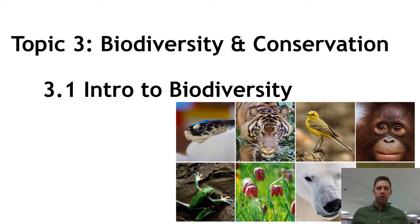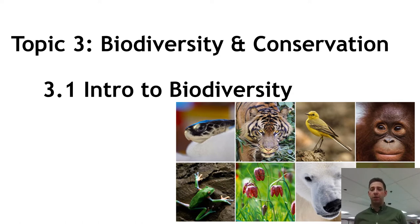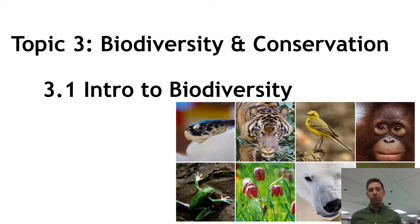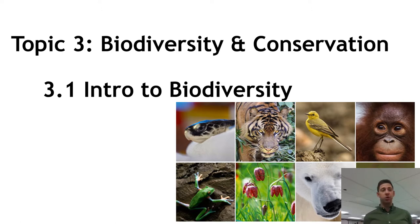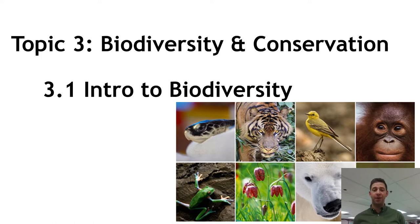We are starting the content unit of Topic 3: Biodiversity and Conservation. This unit has four subtopics. 3.1 is an introduction to biodiversity. 3.2 is called Origins of Biodiversity, which is basically on evolution — the cause for all the different plants and animals on earth. 3.3 is our depressing unit on risks to biodiversity and human-caused endangerment. 3.4 is more uplifting — conservation of biodiversity, how to reverse what we've done as humans to species on earth.